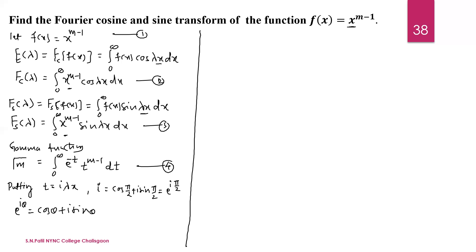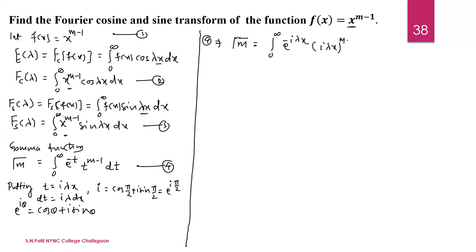With the substitution t equal to i times lambda x, the variable transfers from t to x. Differentiating both sides, dt equals i times lambda dx (where i times lambda is constant). The limits also change: when t equals 0, x equals 0, and when t equals infinity, x equals infinity, so the limits remain the same. Substituting into the gamma function equation gives: gamma of m equals the integral from 0 to infinity of e to the power minus i lambda x times (i lambda x) raised to m minus 1 times i lambda dx.